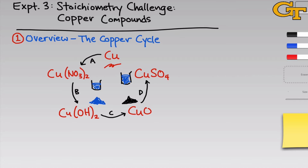Finally, we'll treat the copper 2 sulfate with zinc metal, which is a reducing agent that can convert the copper 2 back to copper metal. At the end of this cycle, if everything goes according to plan and all the reactions go ideally, we should end up with the same quantity of copper metal that we started with.